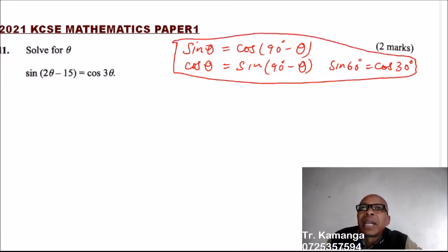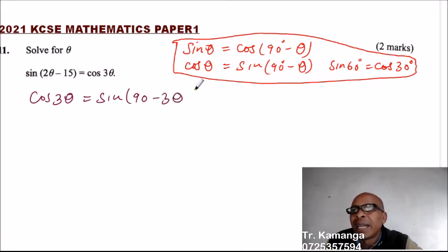Very important. Now, we come back to the question. So if we write, we can write like this: cos 3θ is the same as the sine of 90 minus 3θ. So we apply that. So what we mean is that you can now replace cos 3θ with sin(90 - 3θ).